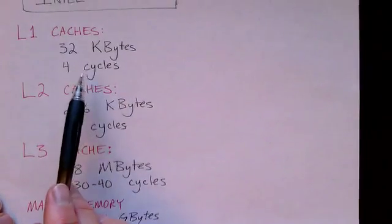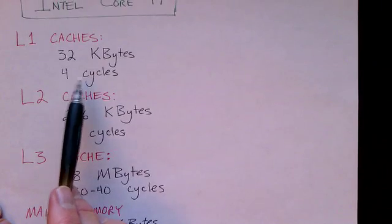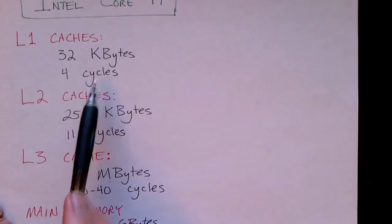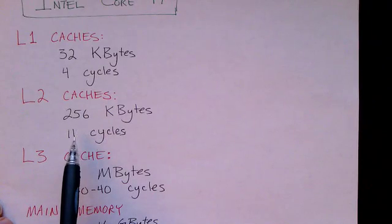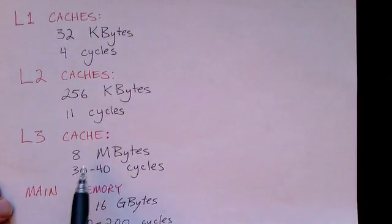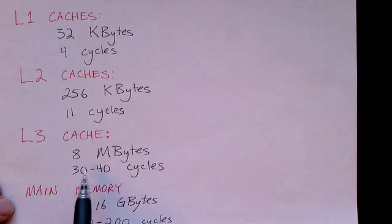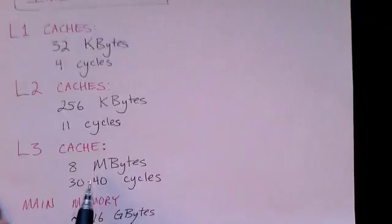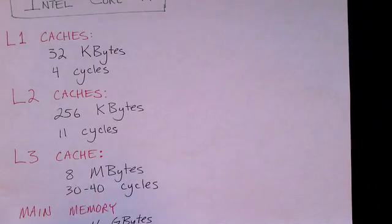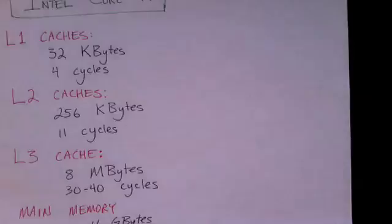The L1 cache is much faster — you're looking at about four clock cycles. L2 caches are slower, maybe two to three times slower than L1. The L3 cache is even slower than that, maybe another three times slower. And then main memory is slower still. In the next video, we'll get into some of the basic concepts and talk in more detail about how caches actually work.